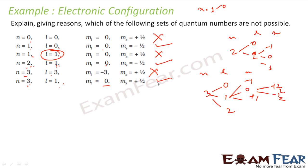The spin quantum number can be plus 1/2 or minus 1/2. These are the answers.